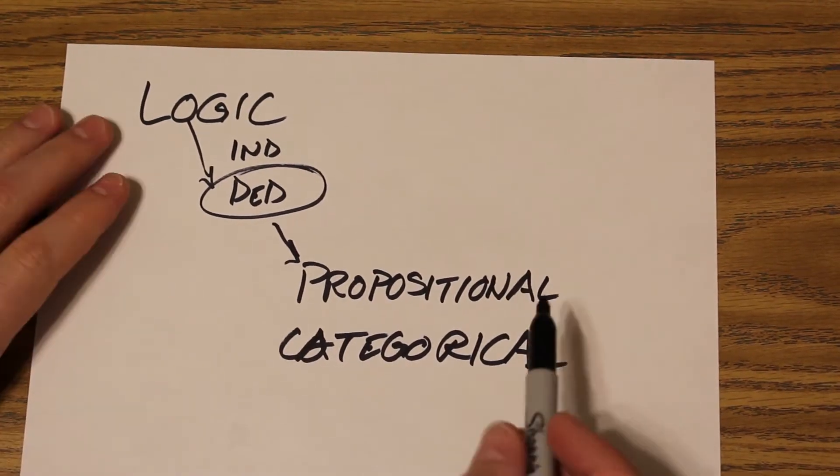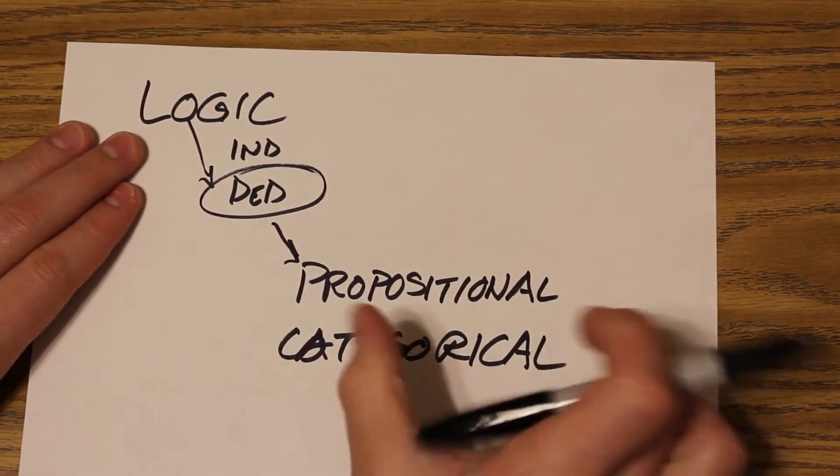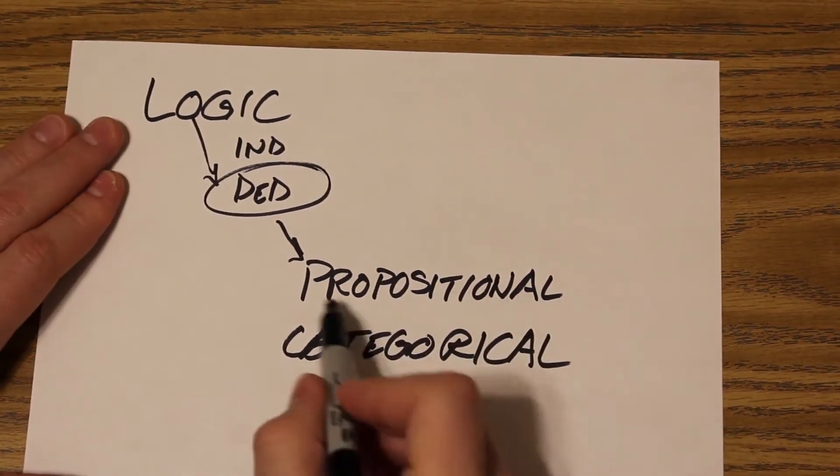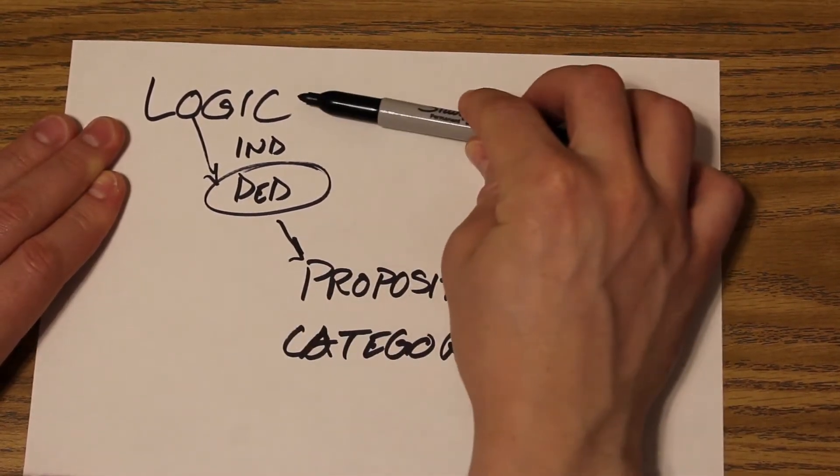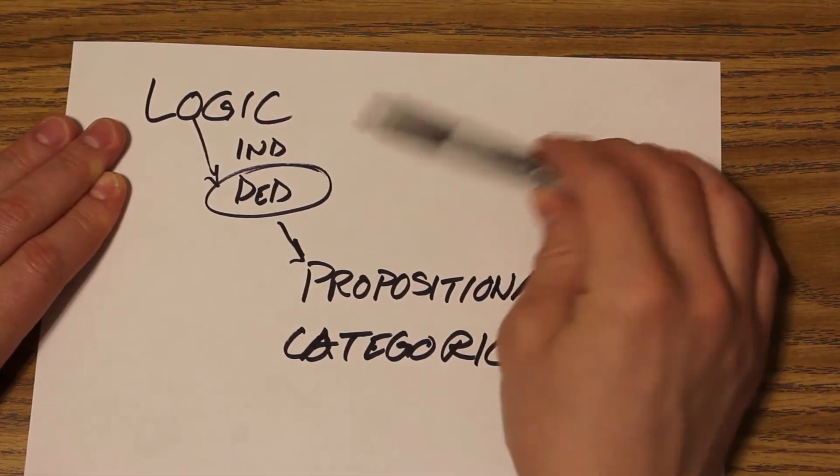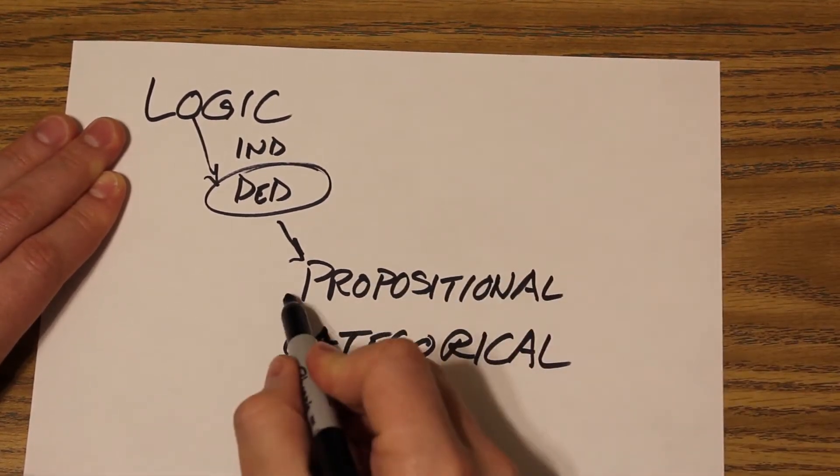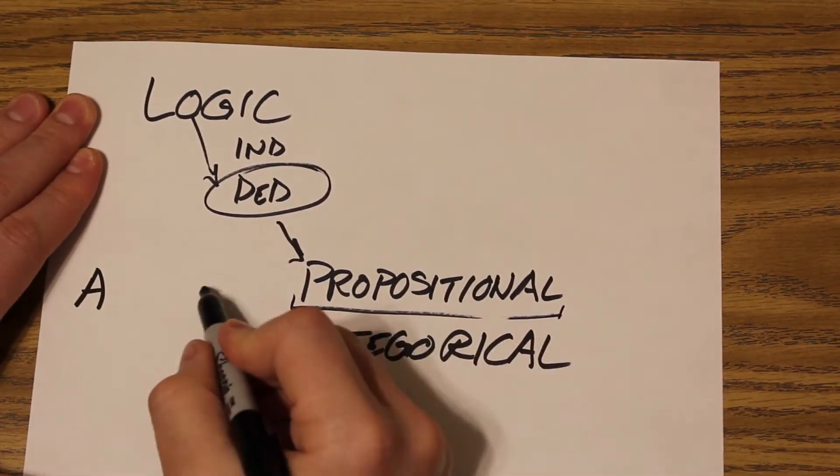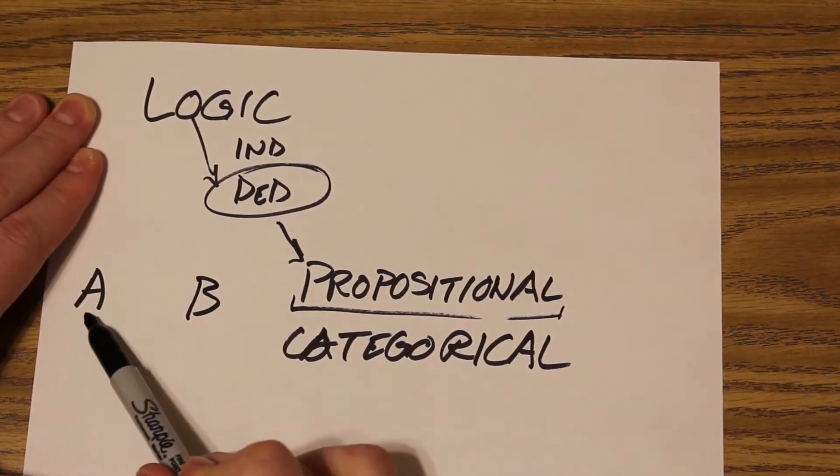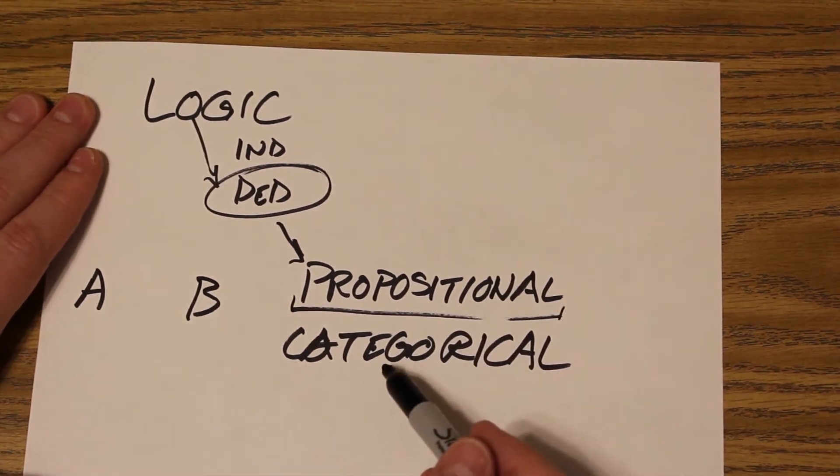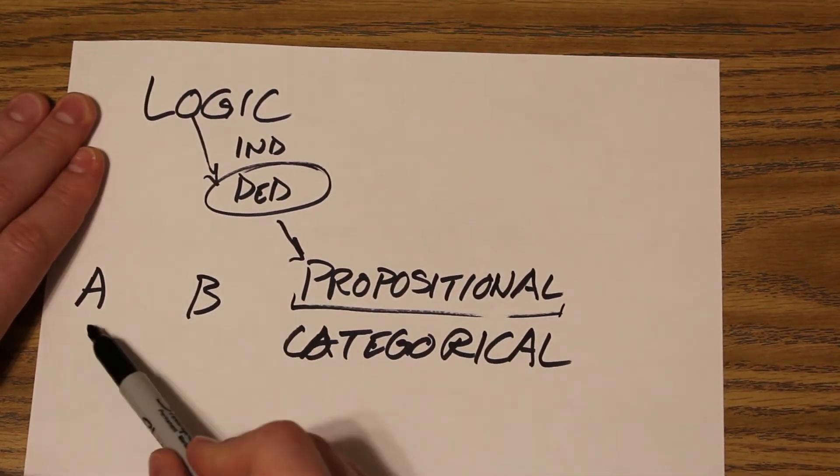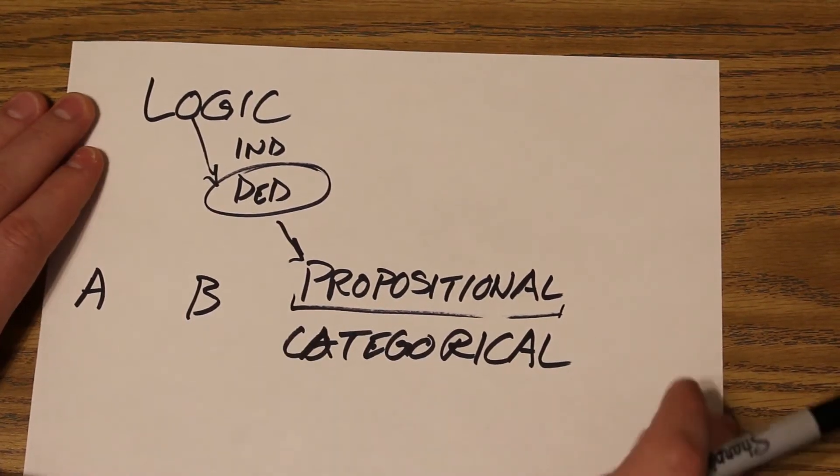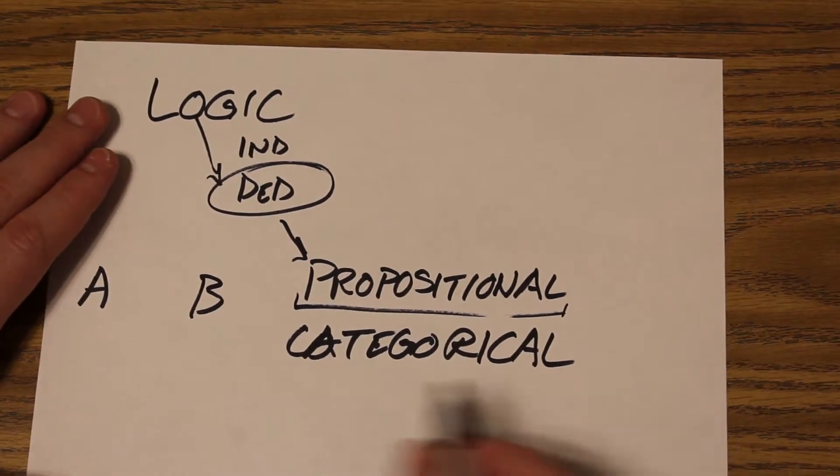So thankfully in math and logic, these things are exactly what they say. These are two structures for relating ideas. Logic is reasoning correctly using deduction. So we're using deduction, and then we get to propositional logic, which is connecting propositions A and proposition B. Categorical logic does the same thing, but instead of connecting propositions A and B, it's categories A and B. It sounds confusing, like it's saying the same thing, but here's the idea.